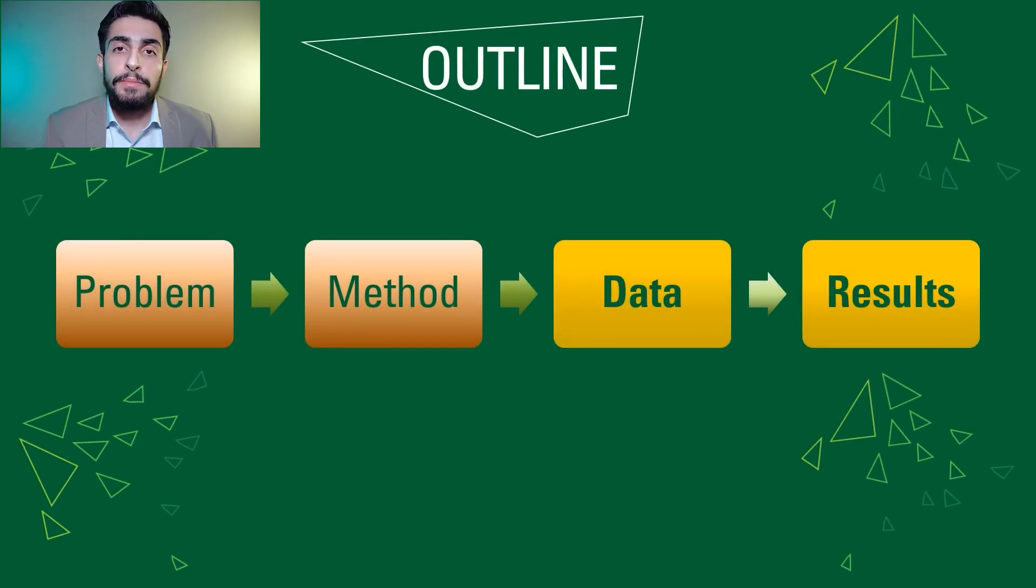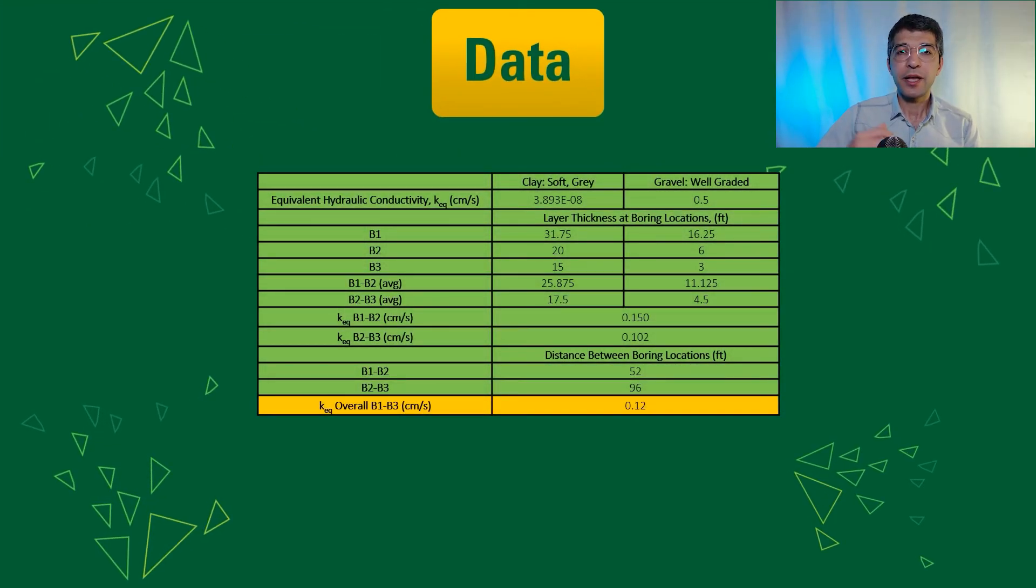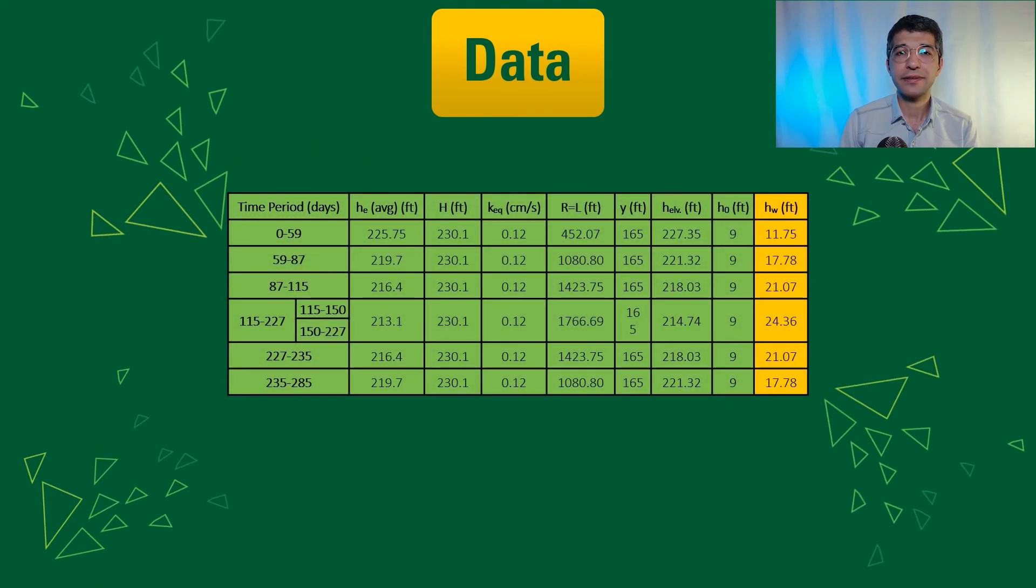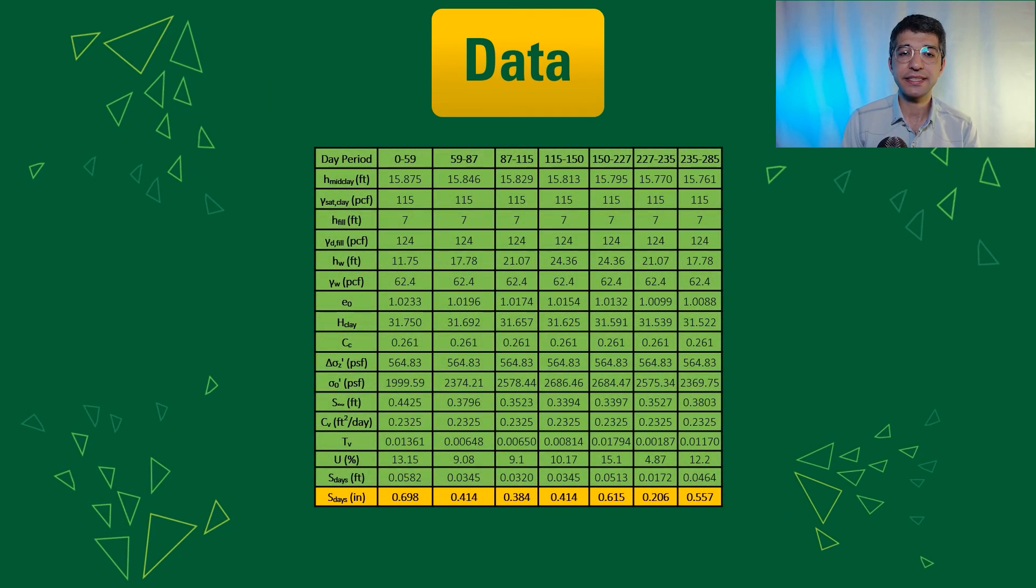Now we are going to walk through some of the data. Now let's look at our calculated data. Based off of our assumption for permeability of different layers of soil, we have calculated equivalent permeability for our whole layer. And also we have calculated height of water table for different time periods. And based off of our assumption for Cv CC, we have calculated our settlement for different period of time.